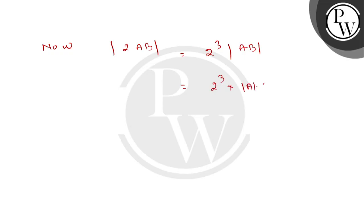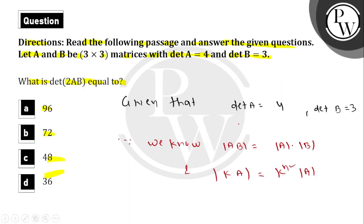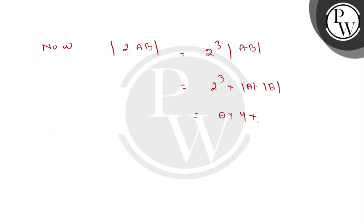Which is determinant of A times determinant of B. 2 to the power 3, determinant of A is 4, determinant of B is 3. So how much is it?